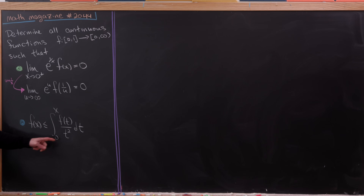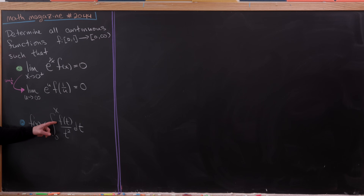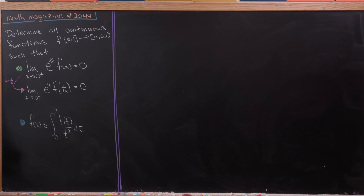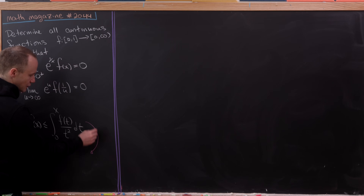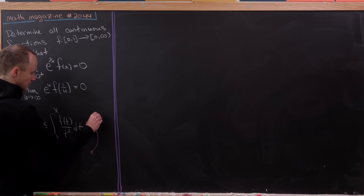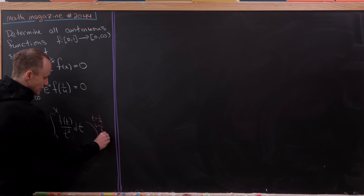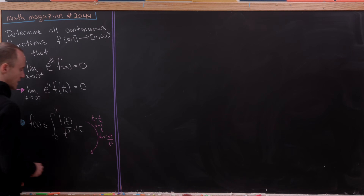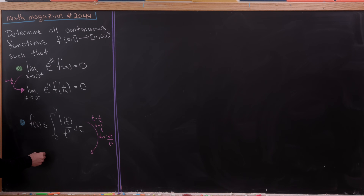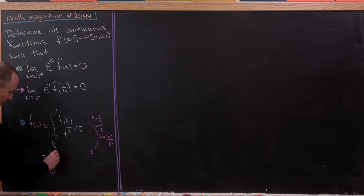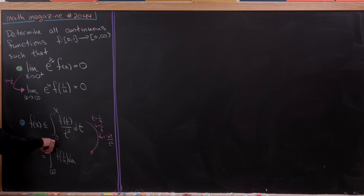Now I'd like to observe that there's a similar substitution hinted at inside the integral. Notice that the derivative of 1/t is −1/t². So that motivates the substitution u = 1/t, or t = 1/u, which means du = −dt/t². This changes the integral to the integral from infinity to 1/x of f(1/u) du, with a minus sign out front. Taking advantage of this, we switch the bounds of integration to go from 1/x up to infinity.